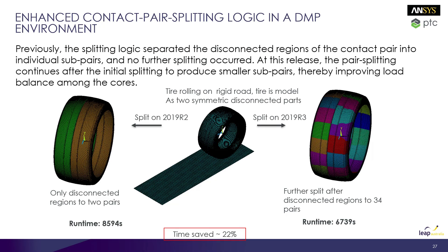Another area of significant improvement is the DMP solver and contact technology. In previous releases, pair-based contacts were separated based on disconnected regions with no further splitting, causing minimal balance among solver cores. In this release, pair splitting continues even after initial splitting to produce smaller sub-pairs, producing better balance among cores. In the tire example shown, the 2019 R3 release demonstrates a greater amount of splitting, and for higher core counts this improves performance — resulting in almost a 22% increase in runtime performance compared to the previous release.